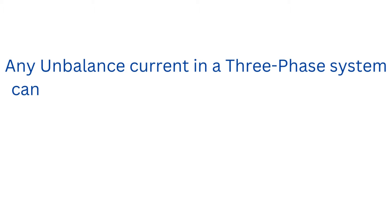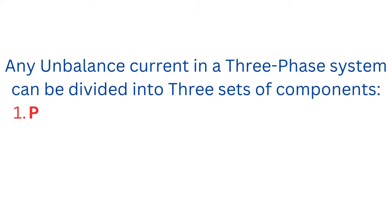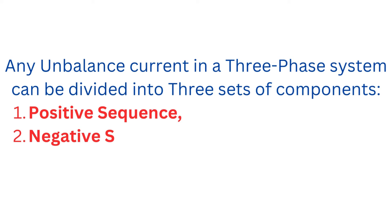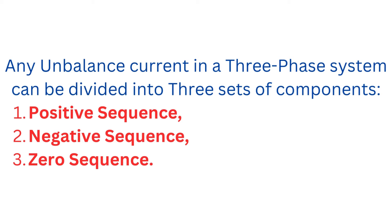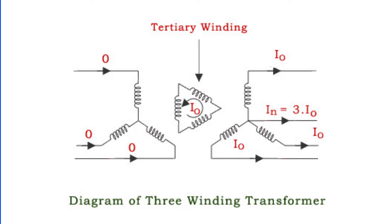Any unbalanced current in a three-phase system can be divided into three sets of components: positive sequence, negative sequence, and zero-sequence components. The zero-sequence current is actually cofasal current in three lines. If the value of the cofasal current in each line is I₀, then the total current flowing through the neutral of the secondary side of the transformer is I_N = 3·I₀.